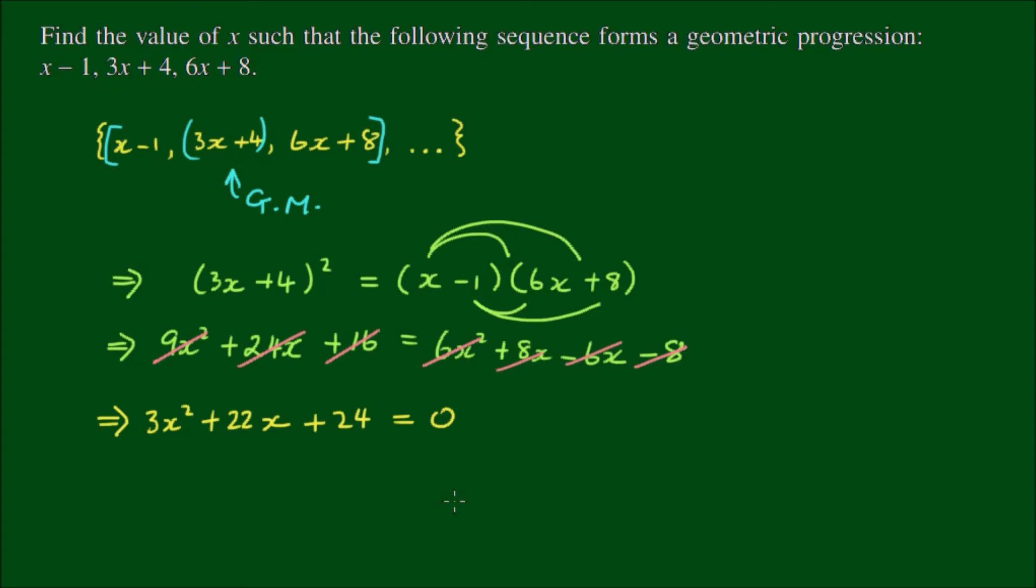which we can solve via the quadratic formula. So if we substitute this into the quadratic formula and solve for x that way, we know that x equals negative 22, so negative b, plus or minus the square root of b squared, which is 22 squared, minus 4 times 3 times 24, minus 4ac, all over 2 times 3, so 2 times a. And this gives us negative 22 plus or minus the square root of 484 minus 288 divided by 6.